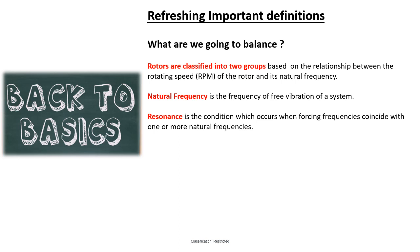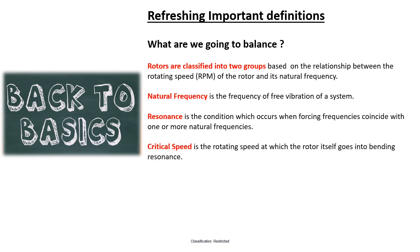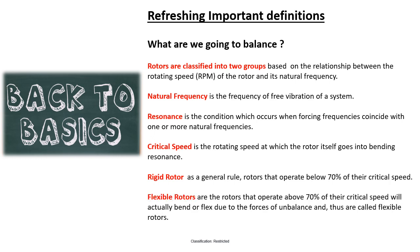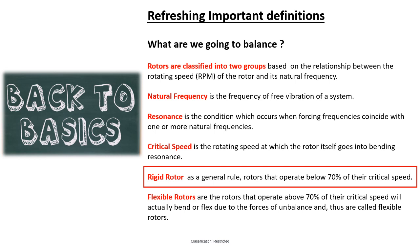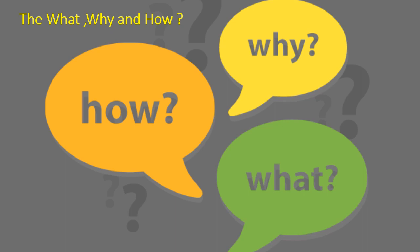Forcing frequencies are typically the frequencies of unbalance, misalignment, looseness, and other defects. Critical speed is a special case of resonance where vibration is caused by rotation of the rotor — it is the rotating speed at which the rotor itself goes into a bending resonance. Rotors operating below 70% of critical speed are called rigid rotors, and those operating above 70% are called flexible rotors. In this video we will talk about rigid rotors only.